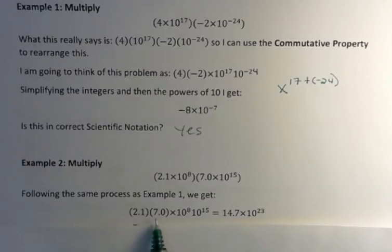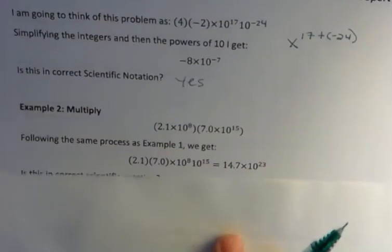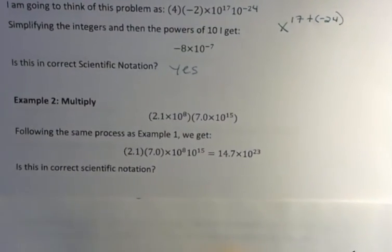Now 2.1 times 7 is 14.7, and 8 plus 15 is 23. When I'm doing the powers of 10, I'm just adding those bases together to get that new power. So the question I have then, is this in correct scientific notation?